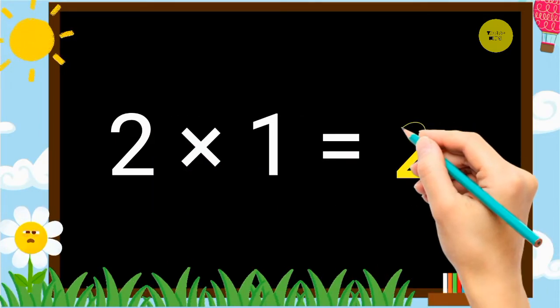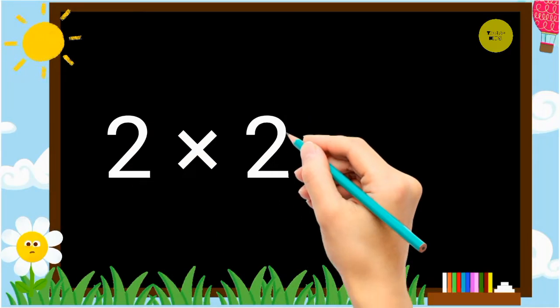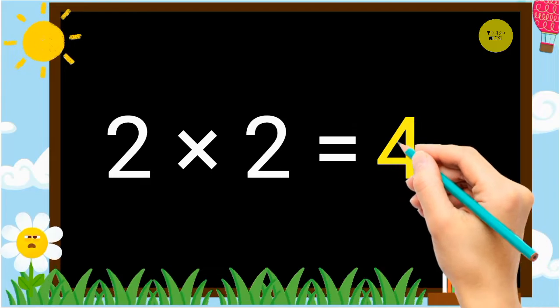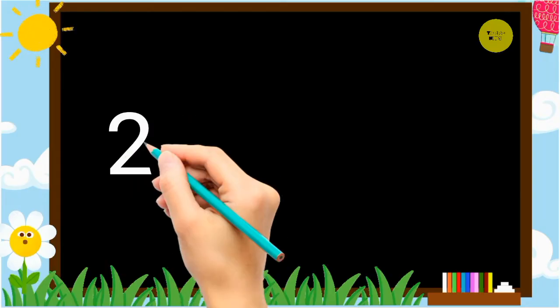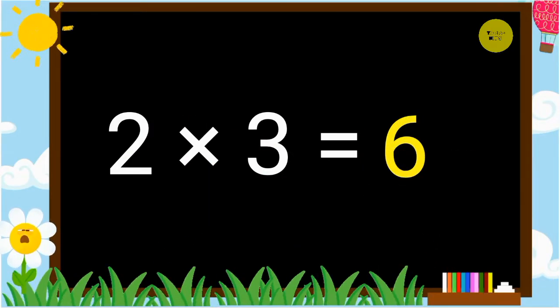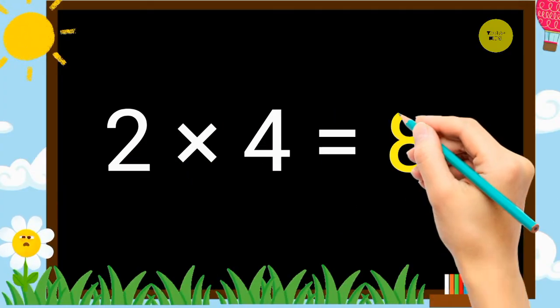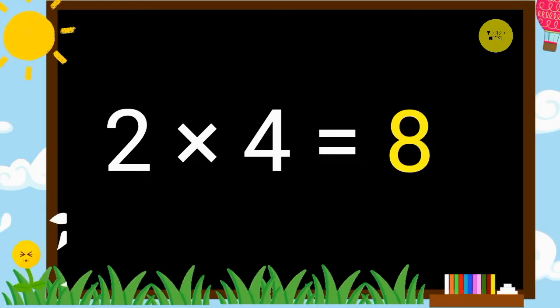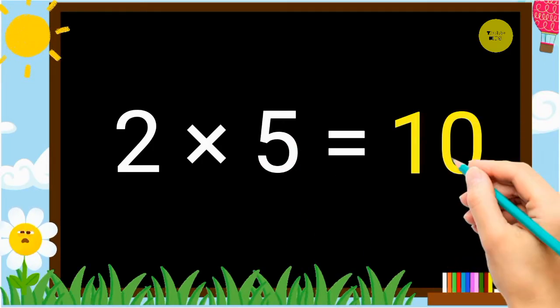2 1's a 2. 2 2's a 4. 2 3's a 6. 2 4's a 8. 2 5's a 10.